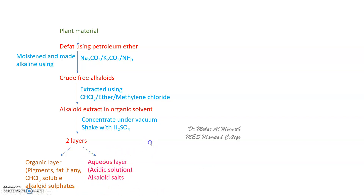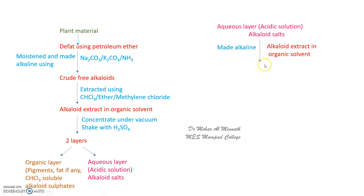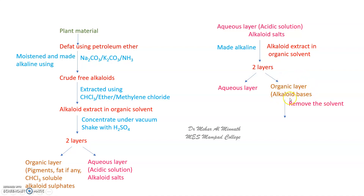Take the aqueous layer and treat it with alkali again. After making it alkaline, extract it with organic solvent in the same way as before — similar second and third steps. Again, two layers are obtained; the organic layer contains the alkaloid bases. Remove the solvent under reduced pressure to get the crude alkaloid mixture.